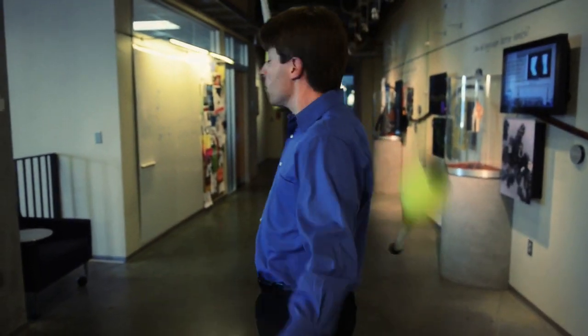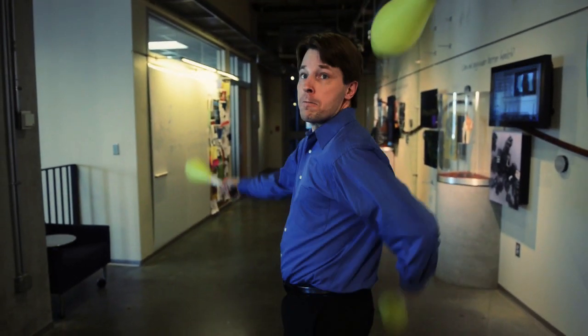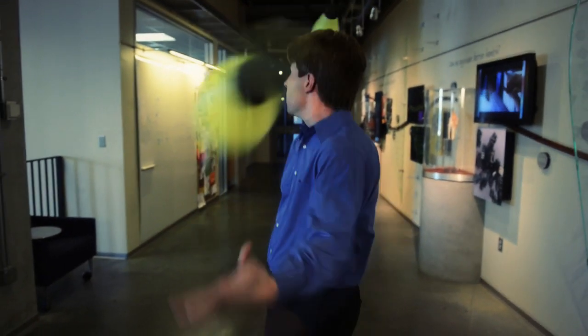When you're juggling, you're using your eyes to measure where the balls are. But in addition, you use the touch information when the balls hit your hands, just like you likely use the touch information from your feet when your feet strike the ground.